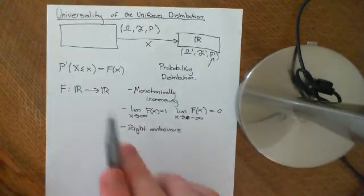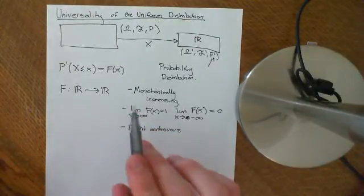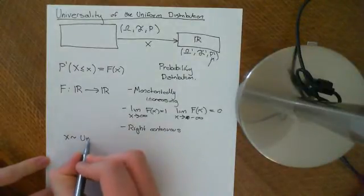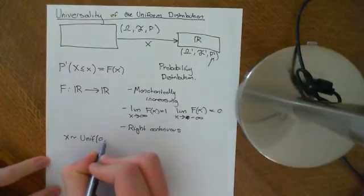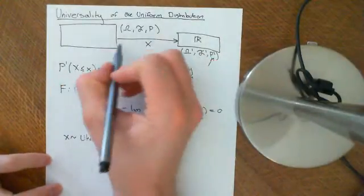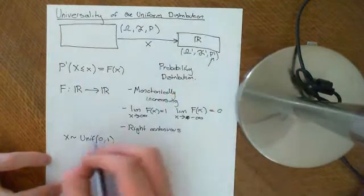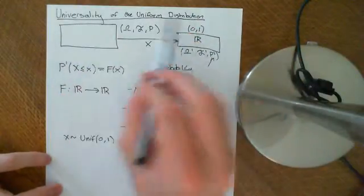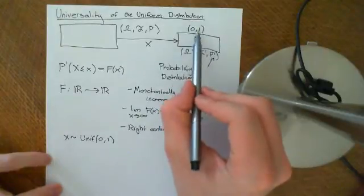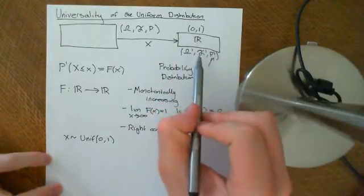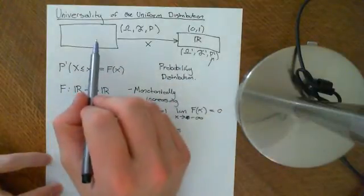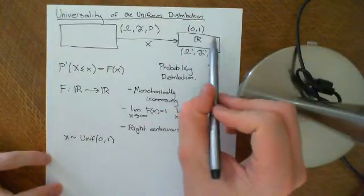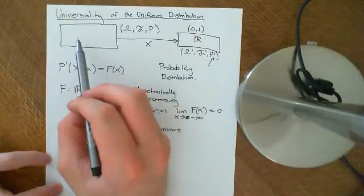Now I'm going to show you the universality of the uniform distribution. It says that if you have a random variable x which is uniformly distributed on the interval 0 to 1 — so this random variable maps this abstract probability space onto the interval 0,1 — we make sure that this inherits the probability space structure of the original, i.e., as far as the probability space structure is concerned, it's almost like just relabelling the elements.